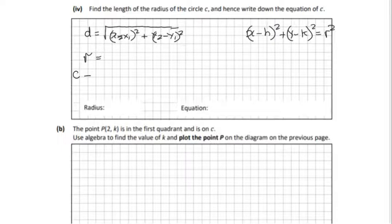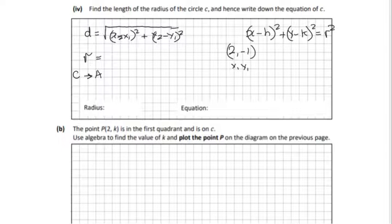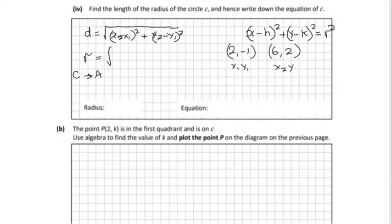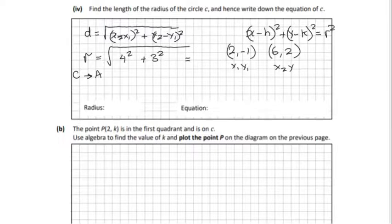We'll go from C up to point A at (6, 2). Setting C = (2, −1) as (x₁, y₁) and A = (6, 2) as (x₂, y₂): the difference of the x's is 6 minus 2, which is 4 squared, and the difference of the y's is 2 minus (−1), which gives 3. Be careful with the signs when you have negatives. So r = √(16 + 9) = √25 = 5.